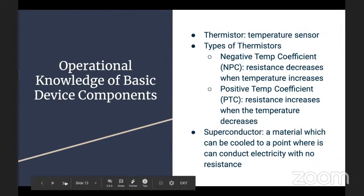One of the last overall categories is operational knowledge of the basic device components. One is a thermistor - a temperature sensor. There's two main types: the NTC, where resistance decreases when temperature increases, and a PTC. A superconductor is a material which can be cooled to a point where it can conduct electricity with no resistance.